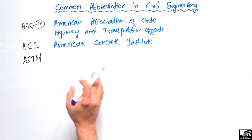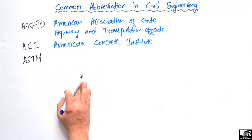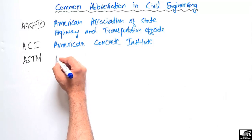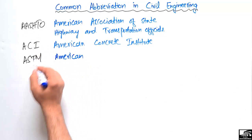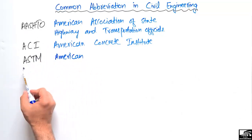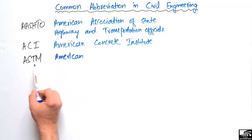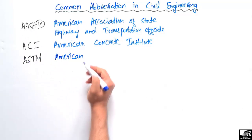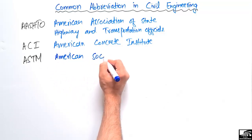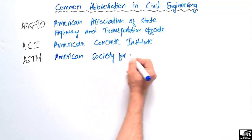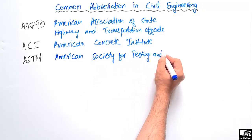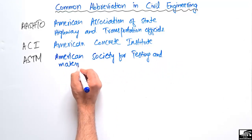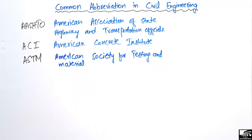The third one is ASTM, which also provides codes for testing materials and for the design of structural members. These are the most commonly used organizations in civil engineering. When designing structural members, you will often hear these organization names. ASTM stands for the American Society for Testing and Materials.